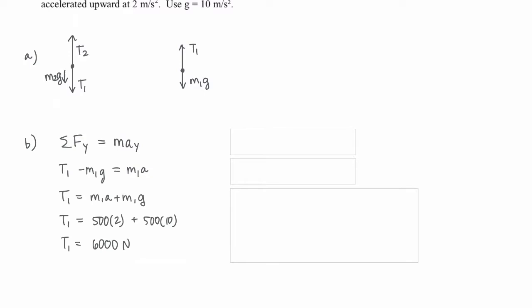We're going to say that T1 is positive and Mg is negative. Rearranging, we can add M1g to the other side, and plugging in our values, we get that the tension in cable 1 is 6,000 newtons.